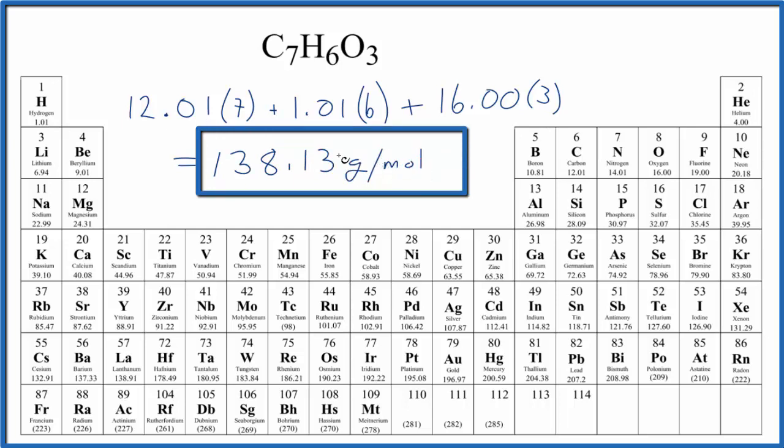What that means is if we had 138.13 grams of salicylic acid that would be one mole of salicylic acid. If someone gave you one mole you'd know that the mass would be 138.13 grams.